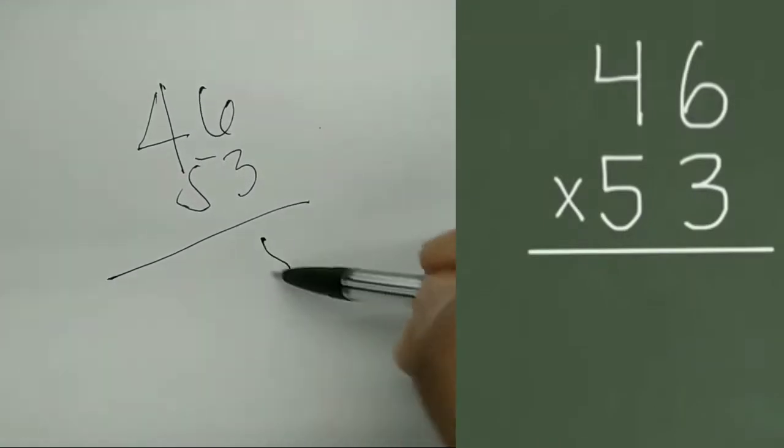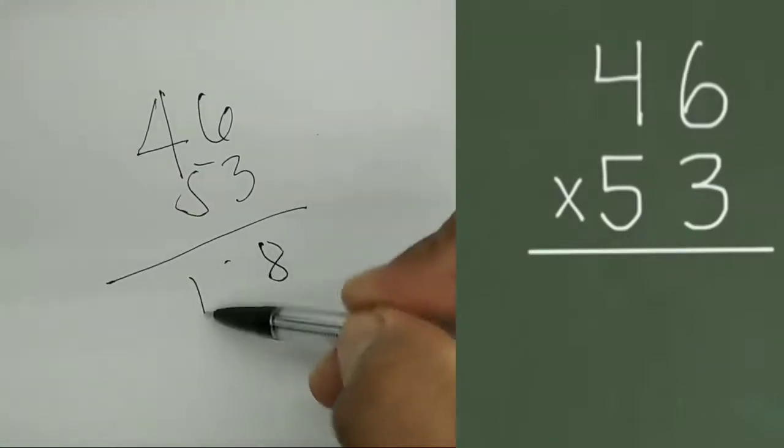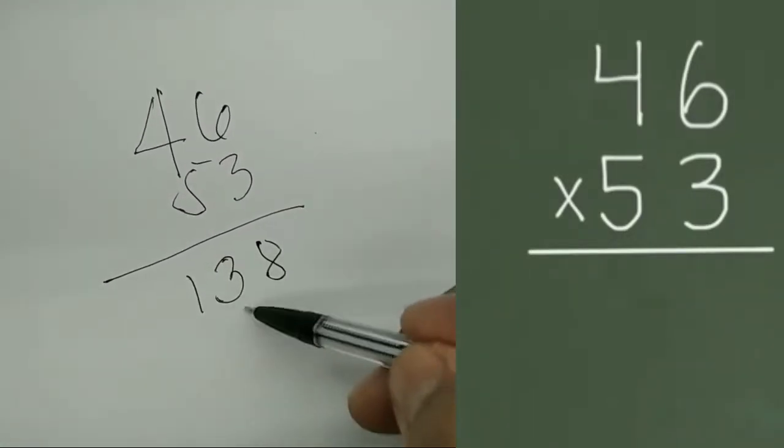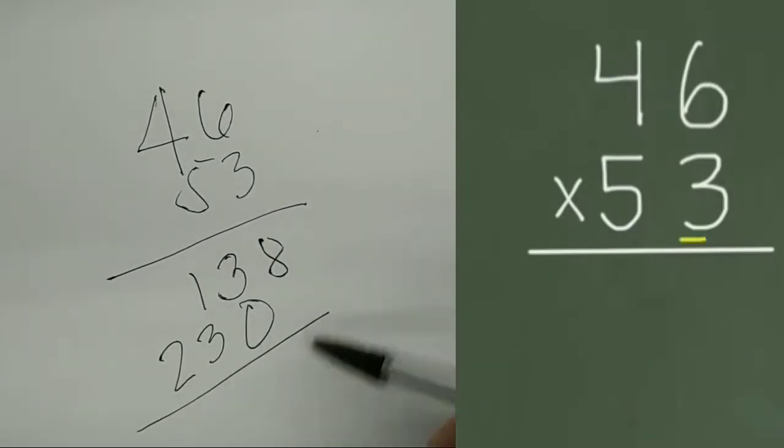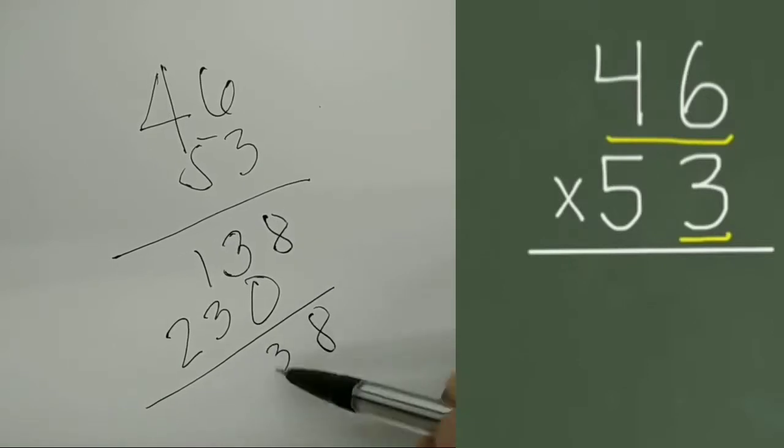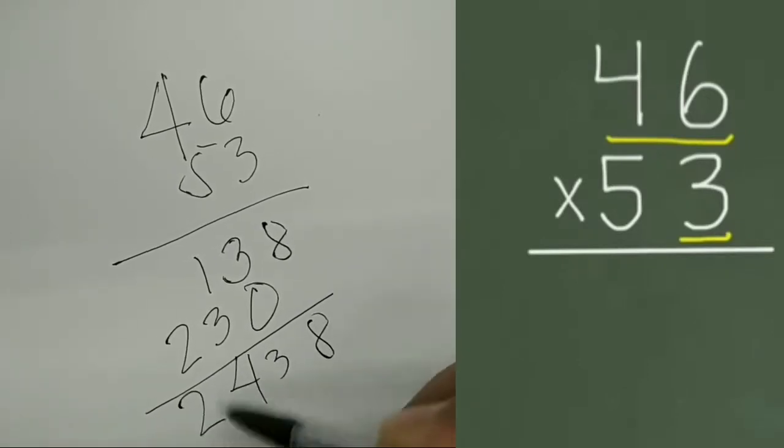Two digit factors, and we need to find the product using the standard method. We begin with our ones place value of our bottom factor, and we multiply that times each digit in our top factor.